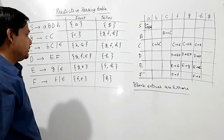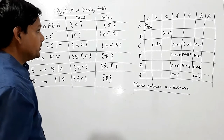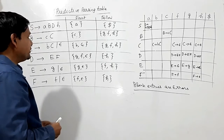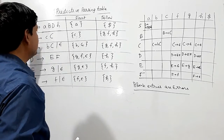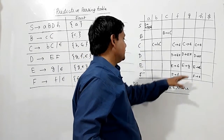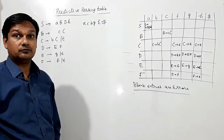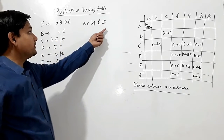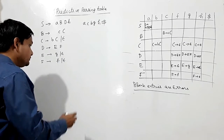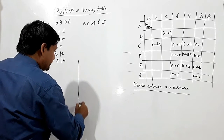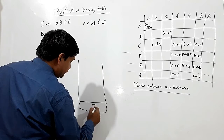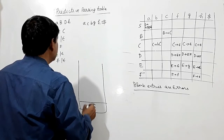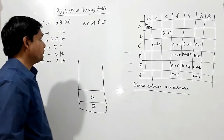Now we shall take a string and try to parse it using the table. The string is A B G H $, where $ indicates the end of the string. We initialize the stack with $ at the bottom and the start symbol S on top.